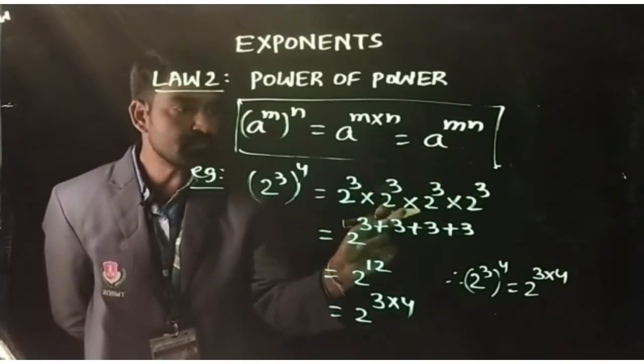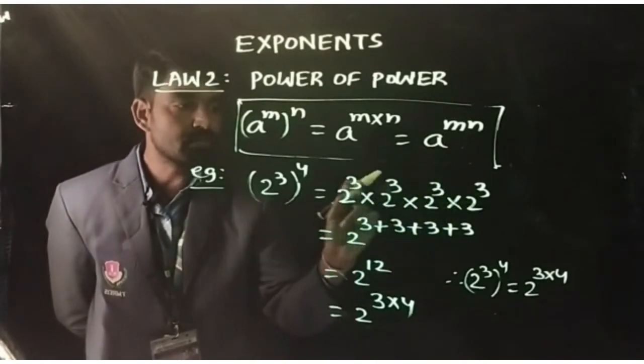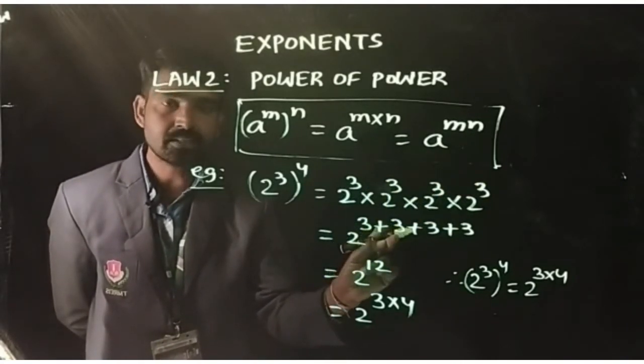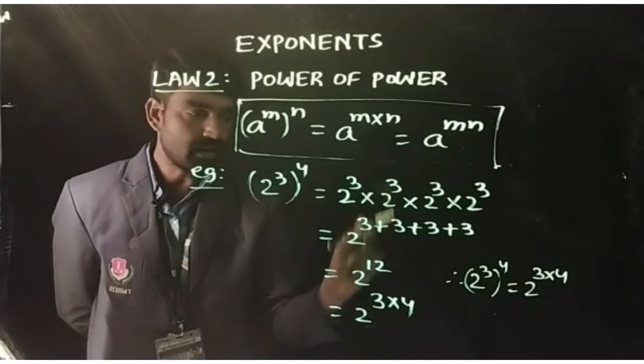Now, in the product, if bases are same, power should be added. That is 2^(3+3+3+3).